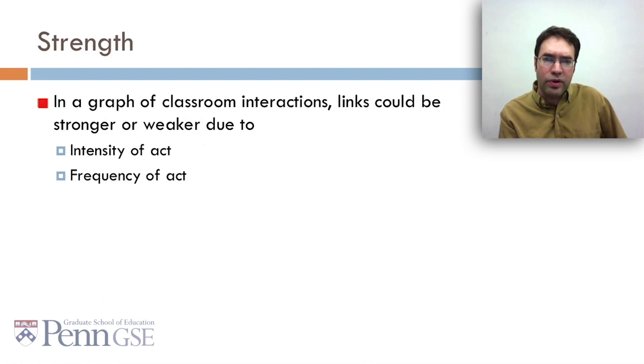Also, in a graph of classroom interactions, links could be stronger or weaker due to two things. The intensity of the act. Is the student just saying, I don't think he did very well? Or are they saying, you're a loser? And the frequency of the act. Does the student insult another student once? Or do they do it every single day, which might even get into bullying?